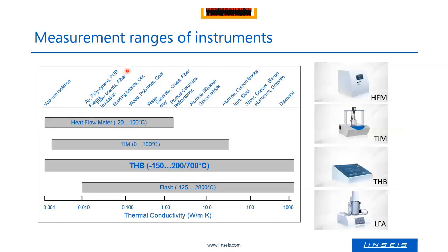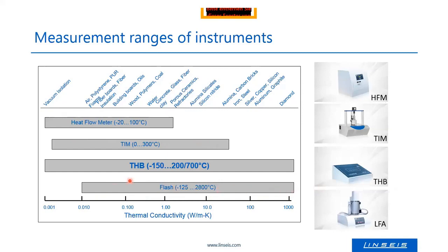The next slide shows the measurement ranges for individual instruments. You can see the heat flow meters — the steady-state instruments — are for lower conductivities. The TIM tester, also a steady-state method, can measure somewhat higher conductivities. The laser flash has a very broad range up to very high conductivities. And the THB has most probably the broadest thermal conductivity range — it can measure more or less all kinds of samples in the temperature range between minus 150 and 700 degrees Celsius.